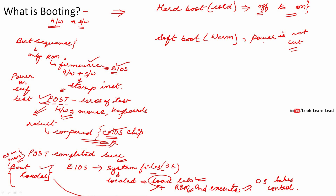In hard boot, the power is cut — you have switched off your system completely. Soft boot is when the power is not cut, that is, when we are restarting the system — the power is still there. So these are the two types of booting: hard boot (cold boot) and soft boot (warm boot).